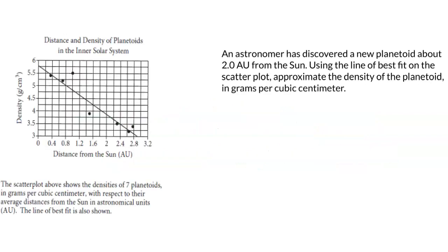In this problem, we've been given a scatter plot that details the distance from the sun of seven planetoids and their density in grams per cubic centimeter.